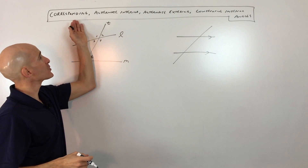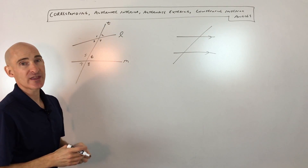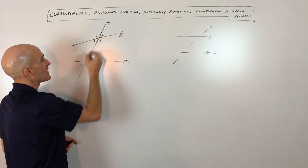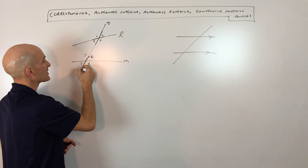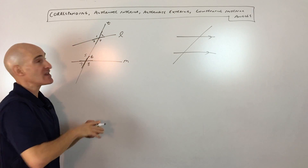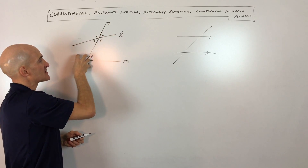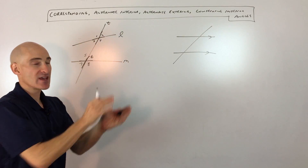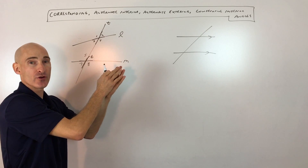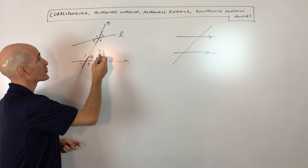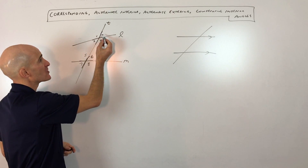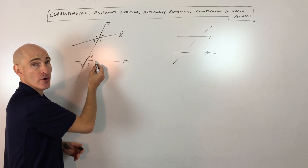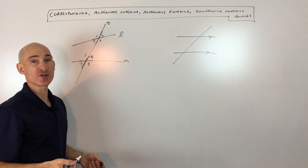So when you talk about corresponding angles, what that means is — see how this forms like an X? And see how this forms like an X right here? If you were to take this X and place it on top of this X, just slide it down like that, the angles that match up with one another or correspond — those are called corresponding angles. So you can think of it like angle 2 and angle 6: upper right-hand corner, upper right-hand corner. Those are corresponding angles.